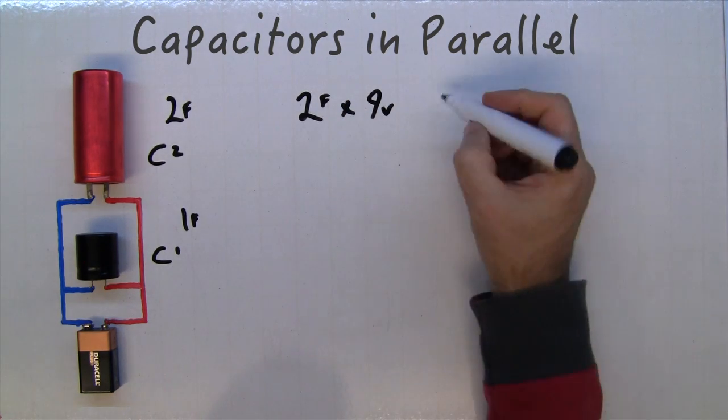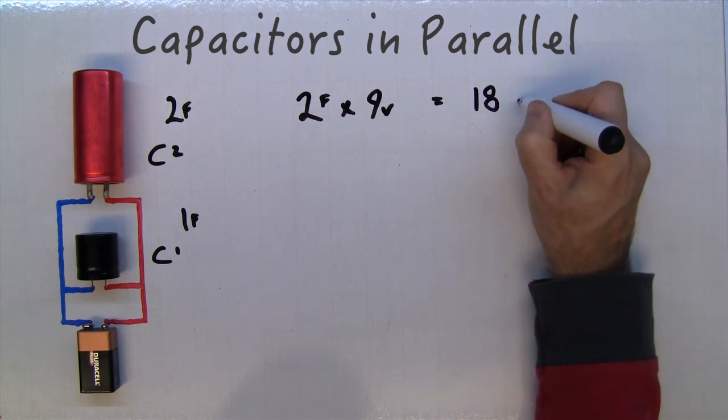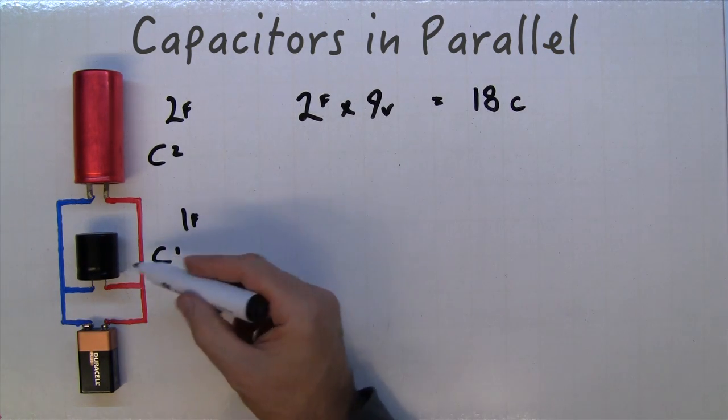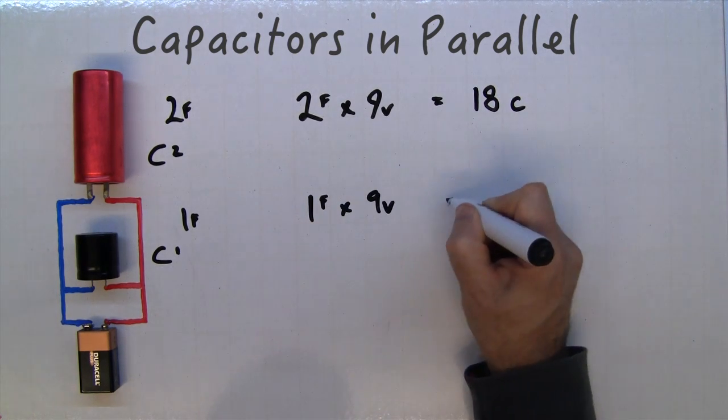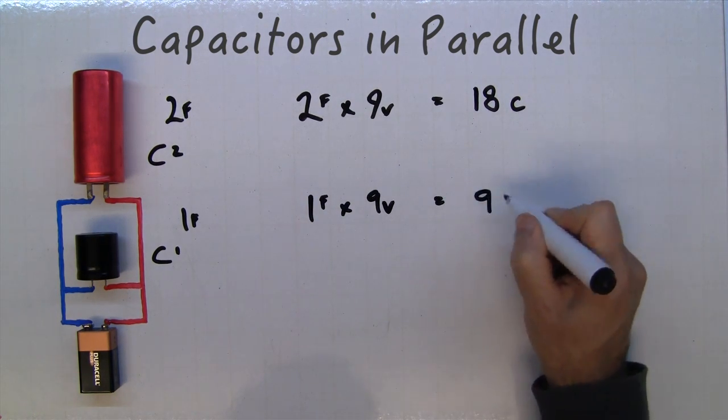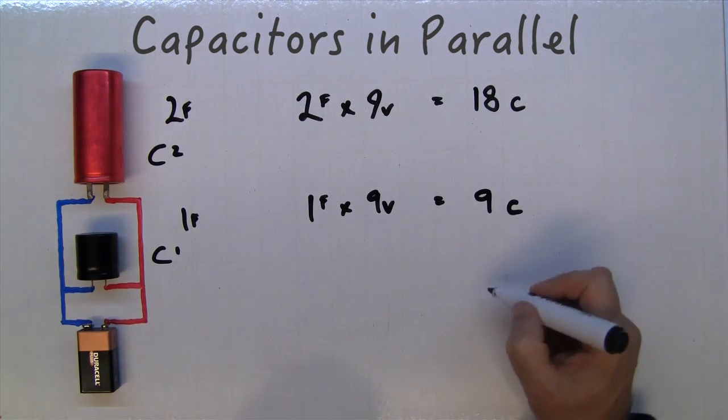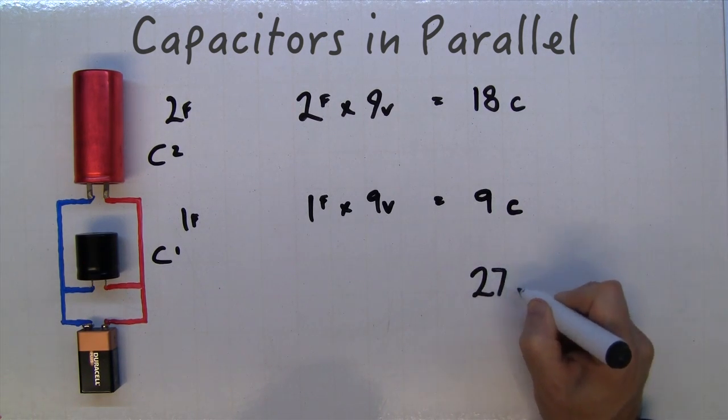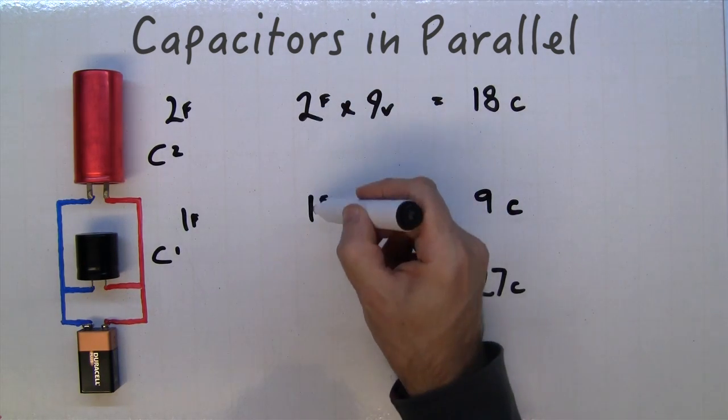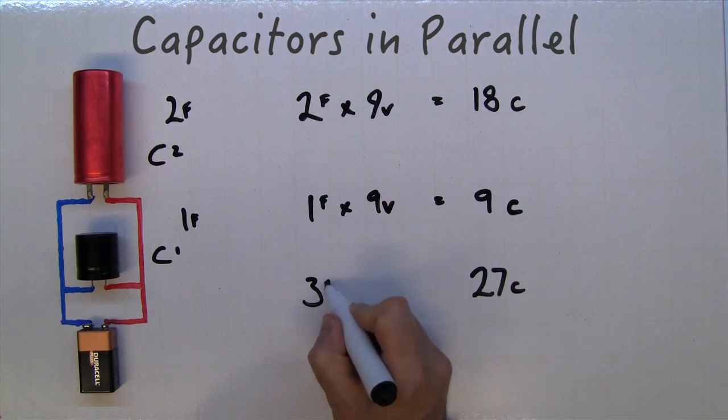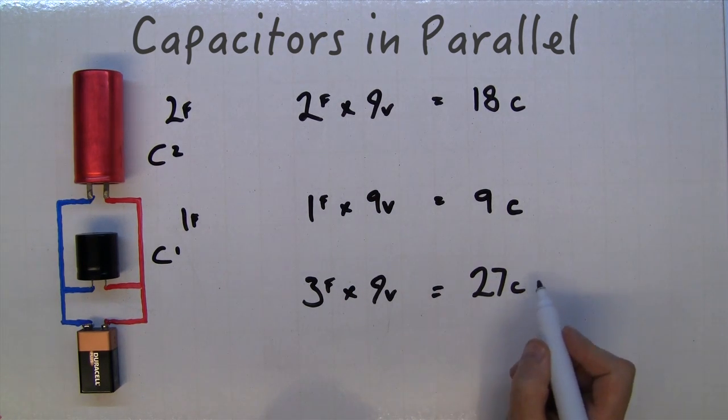The same again here: one farad times nine volts equals nine coulombs. If you add these two together, that's 27 coulombs in total. And two farads and one farad makes three farads. So three times nine is also equal to 27. So the equivalent capacitance is 27 coulombs of charge.